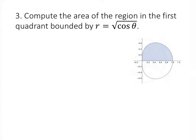Now we're using integrals to find areas of polar regions. The general formula we want to use is that the area is the integral from alpha to beta of 1/2 times f of theta squared d theta.